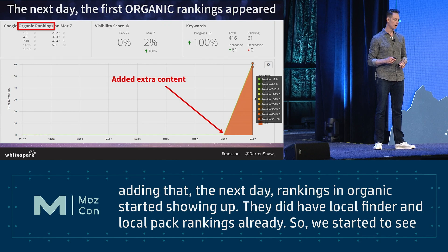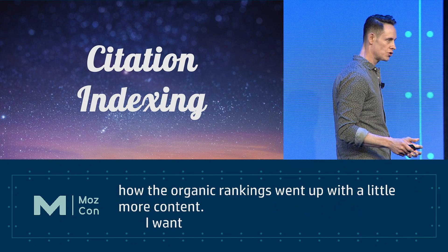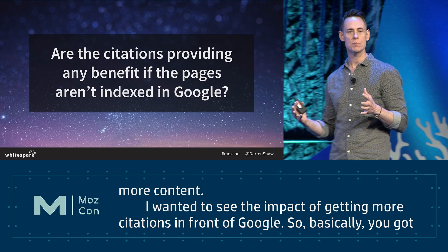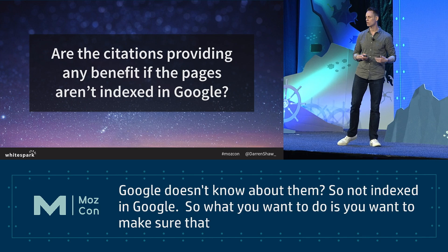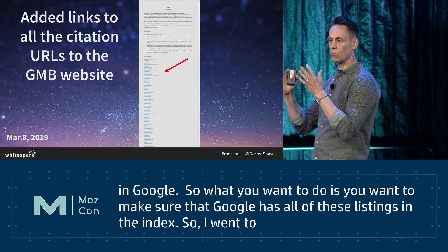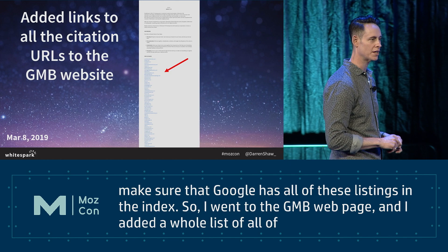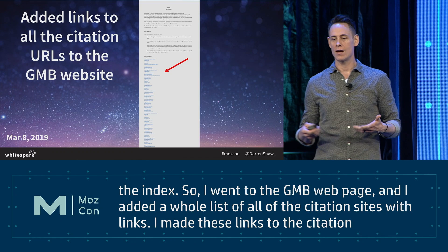I wanted to see the impact of getting more citations in front of Google. You've got to wonder: are citations providing any value if Google doesn't know about them, if they're not indexed? You want to make sure Google has all of these listings in the index. So I went to the GMB web page and added a whole list of all the citation sites with links, which is typically how you get more citations indexed.